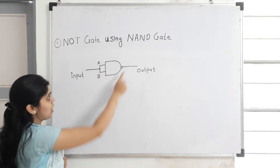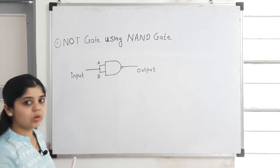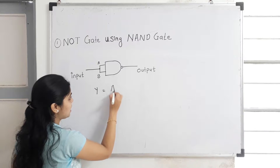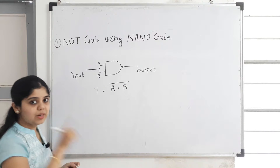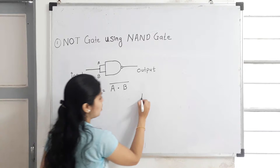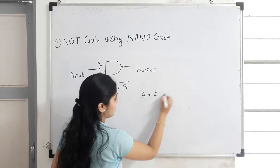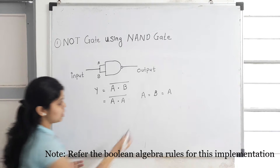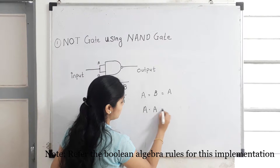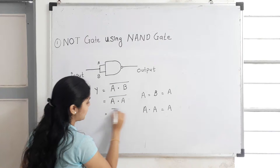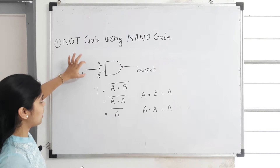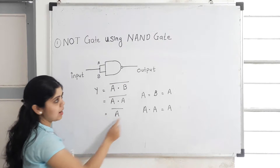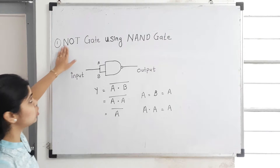I have drawn a NAND gate and by applying two inputs I have connected both the inputs together. So the output of the NAND gate is written as A dot B bar, but as my inputs are the same — that is A is equal to B — I can write it directly as A. So here I am applying A dot A bar. Now by using the Boolean algebra rules, A dot A can be written as A bar. So I can write it as A bar. Whatever input I have applied has been inverted at the output. Hence we get A bar at the output, which means this operation explains the NOT gate operation.